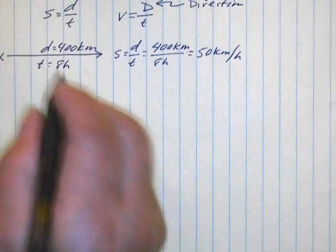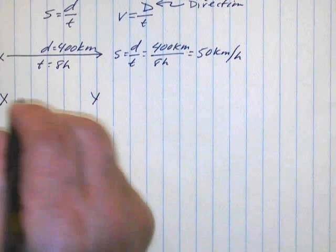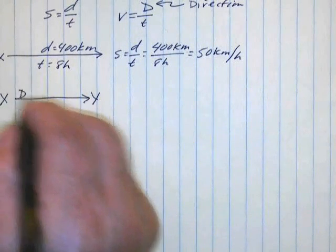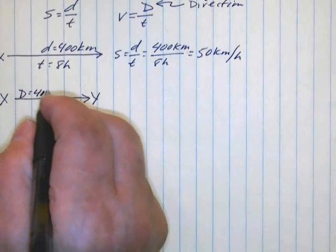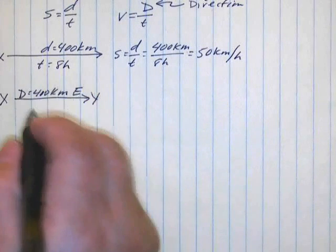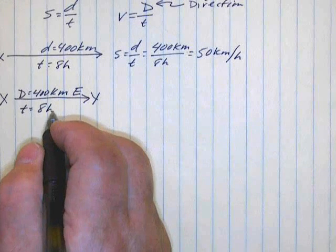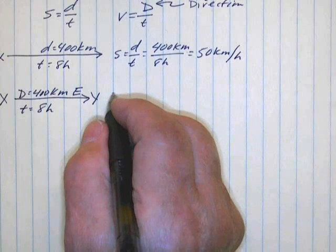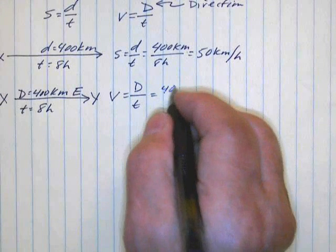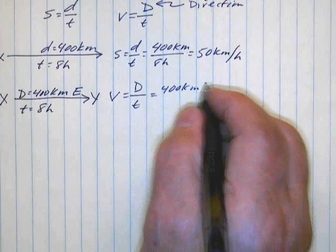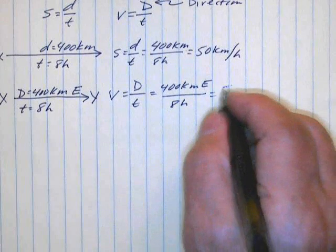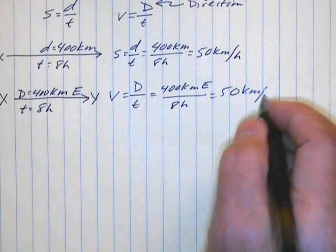Now, if we calculate that same trip from X to Y using the velocity equation, the displacement we can say is 400 kilometers east, east being to the right side of the paper. And the time again is eight hours. If we set this up, we see that velocity equals displacement divided by time, or 400 kilometers east divided by eight hours. And that gives us 50 kilometers per hour east.